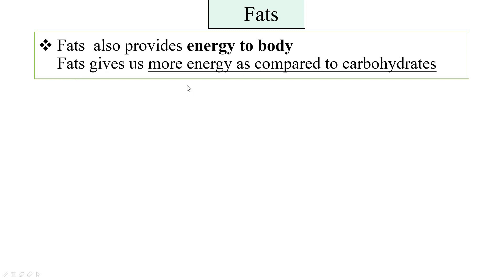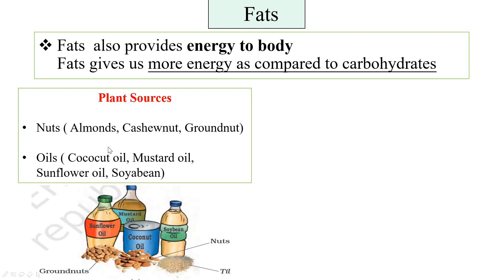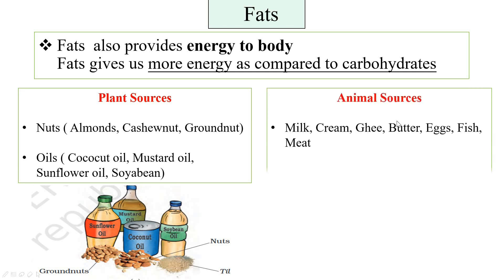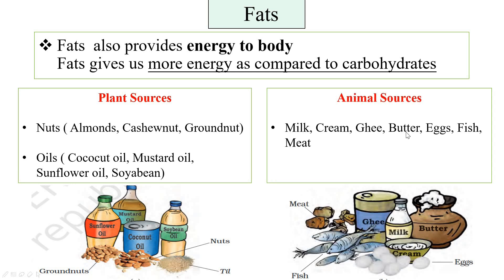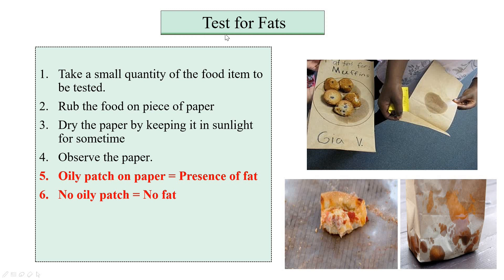Fats also provide us energy — in fact they give us more energy compared to carbohydrates. Plant sources of fats include nuts such as almonds, cashew nut, and groundnut, and oils such as coconut oil, mustard oil, sunflower oil, and soybean oil. Animal sources include milk, cream, ghee, butter, eggs, fish, and meat. To test for fats: rub a small quantity of the food item on a piece of paper, dry it in sunlight, and observe. An oily patch on the paper indicates the presence of fat.